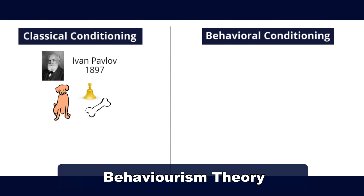So it's about linking two stimuli together to produce a new learned response in a person or animal — basically learning through association. Any objects or events can trigger a conditioned response. Some examples are getting anxious when someone else's phone rings because they're using the same ringtone as your alarm clock, or getting anxious before sitting for an exam — also typical classical conditioning.